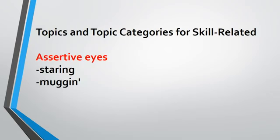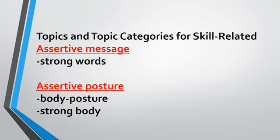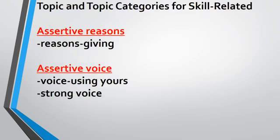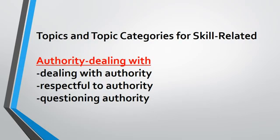Assertive eyes. Strong words and strong body posture. Assertive reasons — giving reasons. Assertive voice — using your voice and using it strong. Dealing with authority, being respectful to authority, and questioning authority. What are the proper ways to do that in a skill-building context?